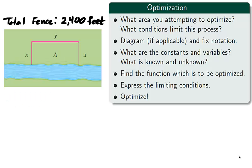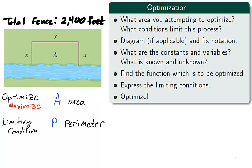There are six steps in completing an optimization problem. You begin by understanding the nature of the problem, asking yourself what are you attempting to optimize, and what conditions limit this process? As you answer this question, fix notation to use in your calculations. It may also be helpful to diagram the situation as you fix notation. We are attempting to maximize the area A enclosed by the fence, but we are limited to the amount of fencing, which describes the perimeter of the rectangle which is to be fenced.